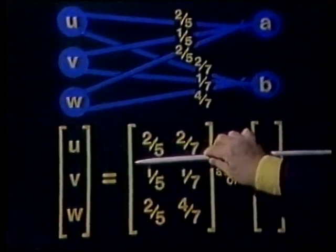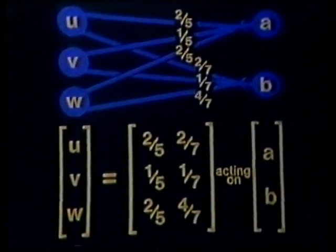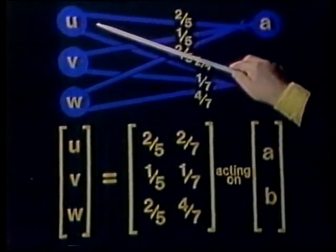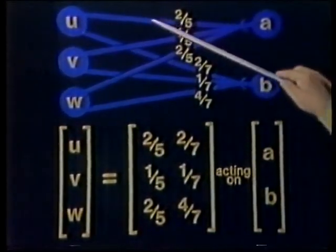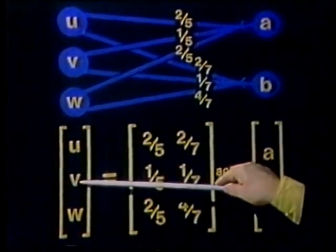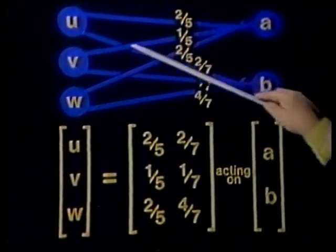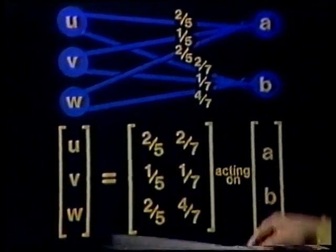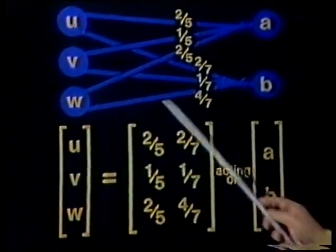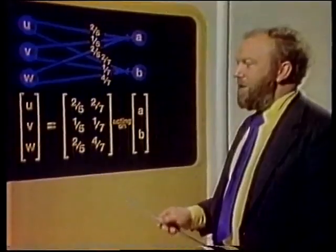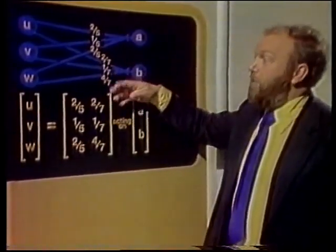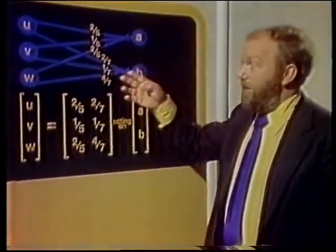Look at the three rows of the matrix. The first row corresponds to the first output, U — it gives the proportions flowing towards U: two-fifths of A and two-sevenths of B. And the second row corresponds to the second output, V, in the same way: one-fifth of A and one-seventh of B. Similarly, the third row gives the flow towards the third output, W: two-fifths of A plus four-sevenths of B. So once we've arranged the columns to be the proportions flowing away from each input, the rows automatically give the proportions flowing towards each output. And that'll work for any network.